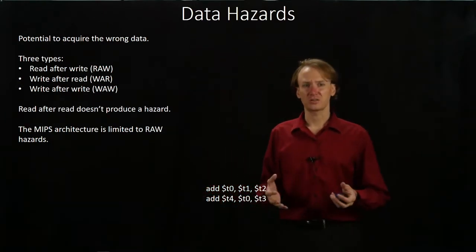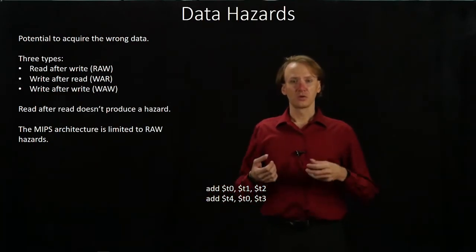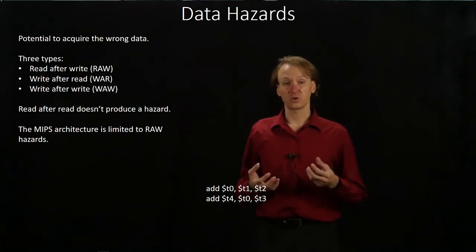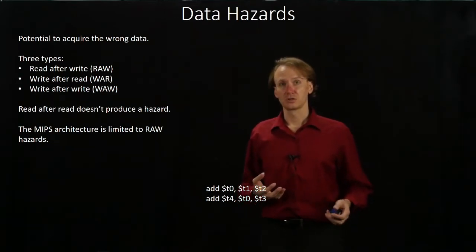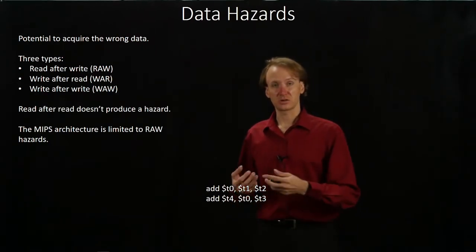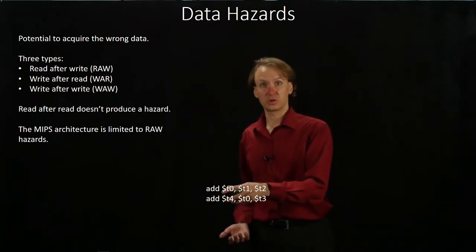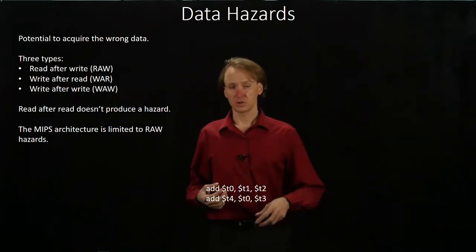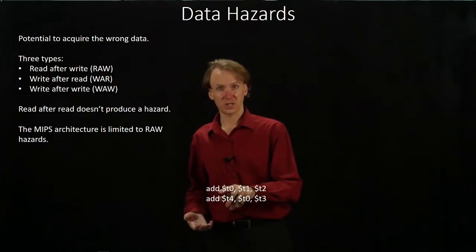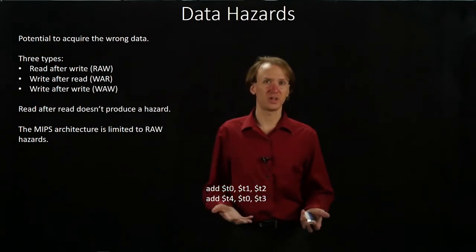This type of hazard occurs when we have two instructions nearby, such as these, where one instruction is going to write to a register and the next instruction is going to read from that register. Here you can see we've got T0 in both of these, and our second instruction wants to use T0, but our first instruction is going to update it. So if our second instruction gets to read from T0 before the first one has had a chance to write to it, then the second instruction is going to get some old data.